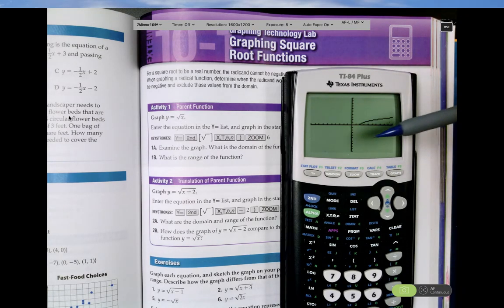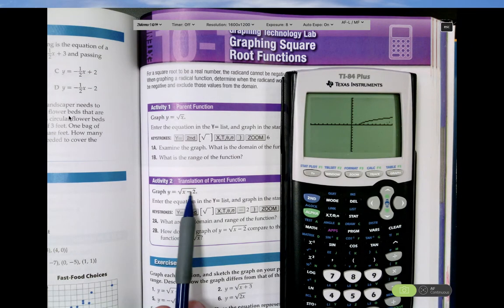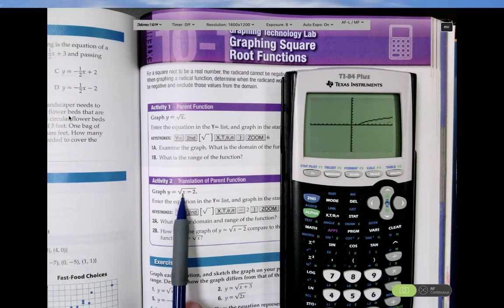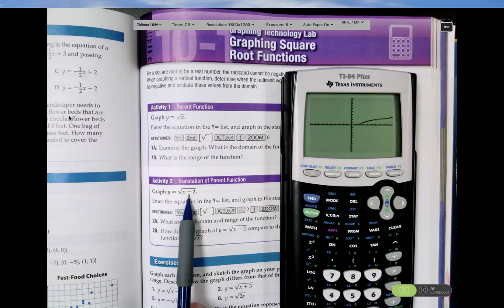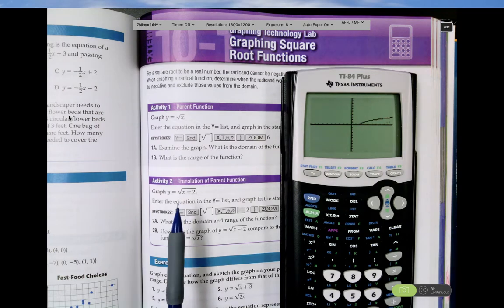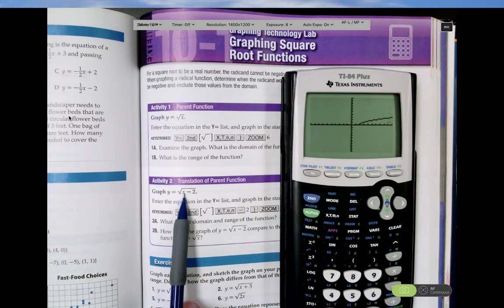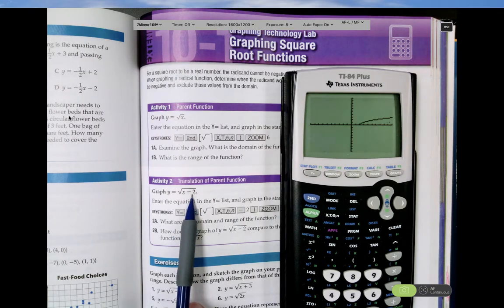Well, what's the domain? Remember that the domain is anything that, in this case, that makes the radicand either 0 or positive because you cannot take the square root of a negative number. So if I put in like negative 3 for x, negative 3 minus 2, no, that's not going to work. It'd be negative 5. You can't take the square root of that.